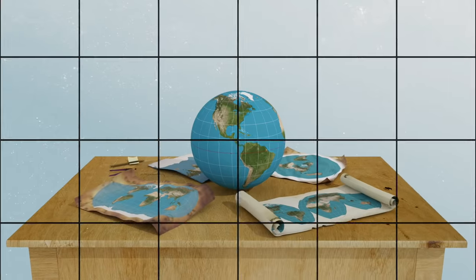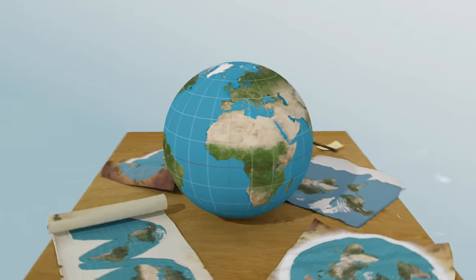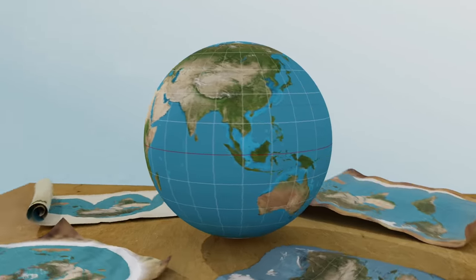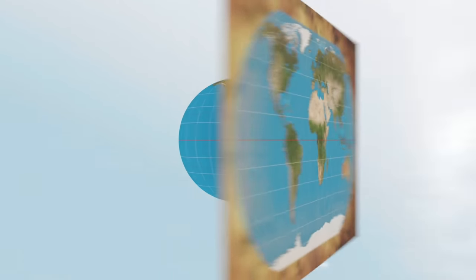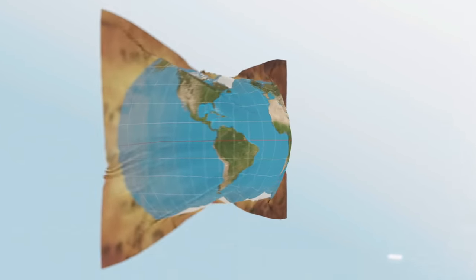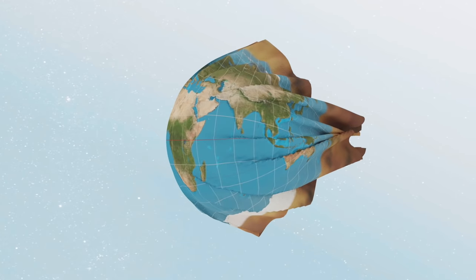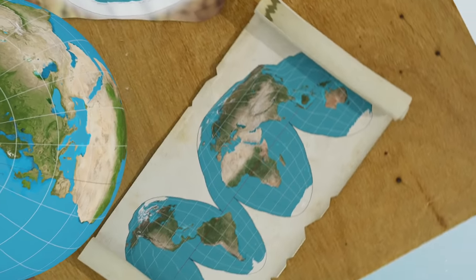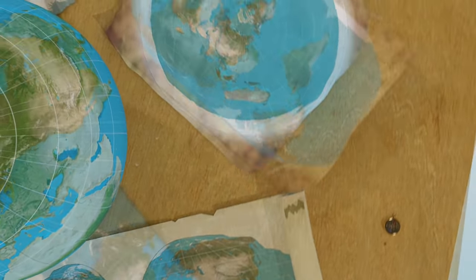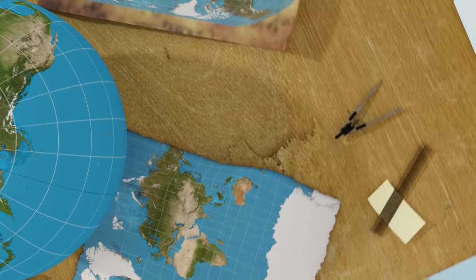All of these maps depict the curved totality of the Earth in different ways. And while no single map encompasses the entire Earth accurately, each offers its own advantages according to the various nautical, geographical, or political needs of its user.